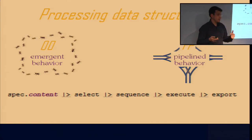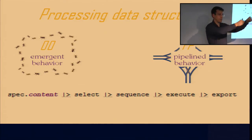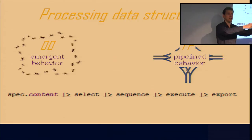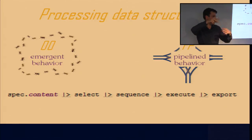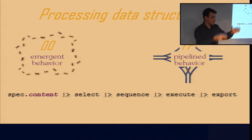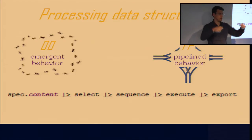This reflects now in Specs 2, because there's an actual line of code where I'm taking the content of the specification, selecting interesting parts, sequencing to know which parts can be executed concurrently, then executing and reporting. This pipeline I had in mind can be pretty much written as it is in the actual software. So that's pretty nice.